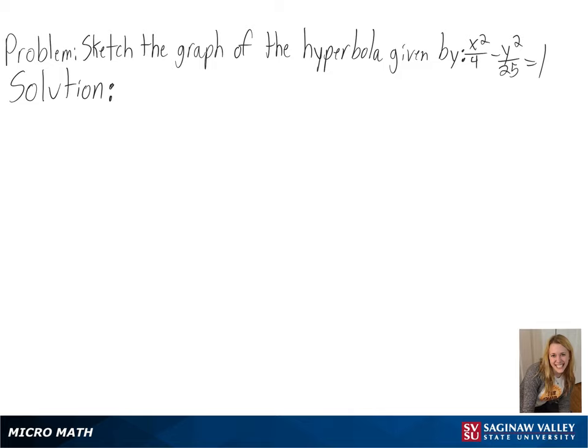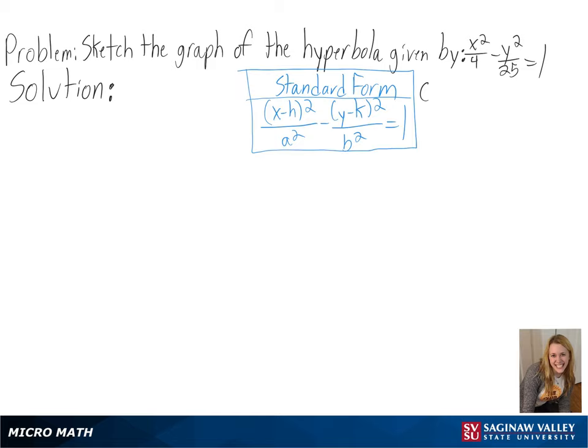Our problem is to sketch the graph of the hyperbola given by x squared over 4 minus y squared over 25 equals 1. Our equation is already in standard form so we can start plotting our graph.